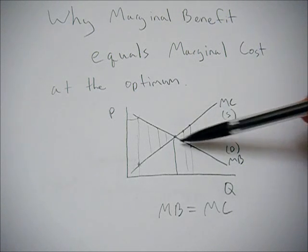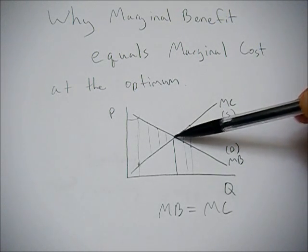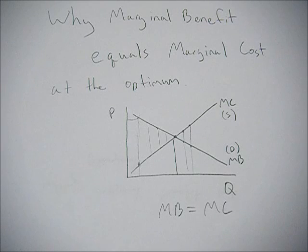So if you're anywhere to the left or right of this point where marginal benefit equals marginal cost, then you're not going to be at the optimum. Your utility or your benefits or your happiness aren't as happy as they could be.